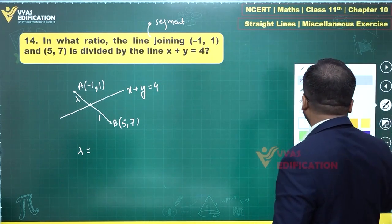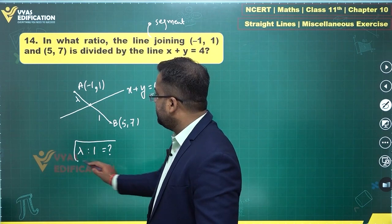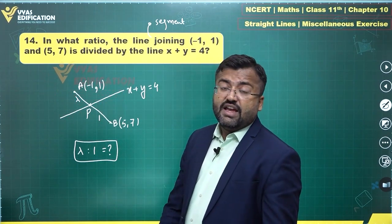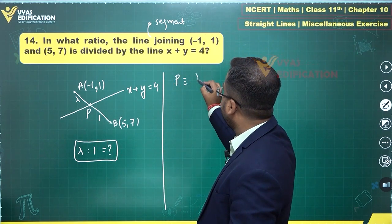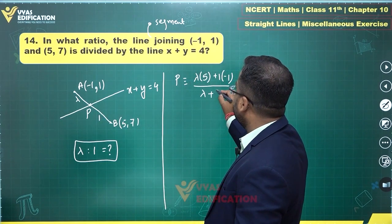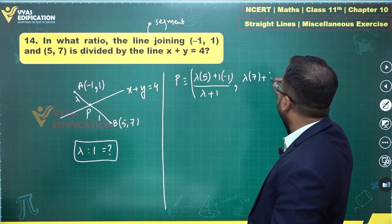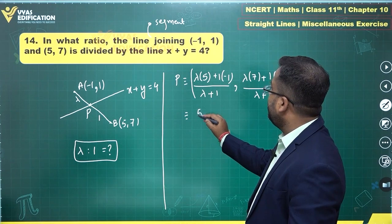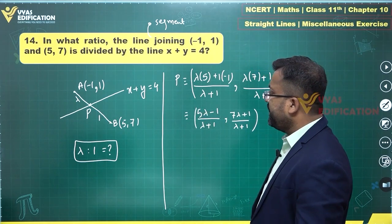We need to find lambda, since 1 is already known. If the ratio is lambda to 1, we can write the coordinates of point P easily. The x-coordinate of P will be (lambda times 5 plus 1 times minus 1) upon (lambda plus 1), which gives (5 lambda minus 1) upon (lambda plus 1). The y-coordinate will be (7 lambda plus 1) upon (lambda plus 1).